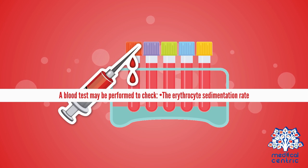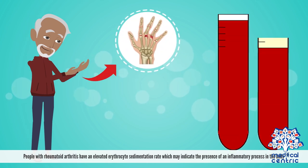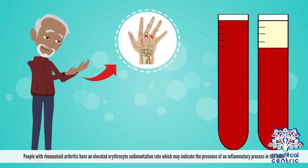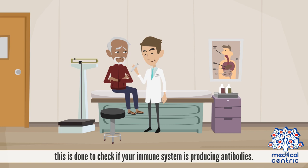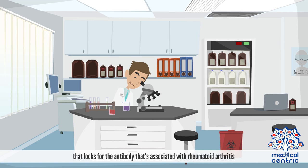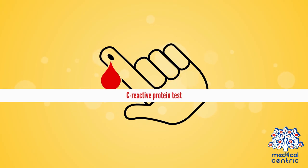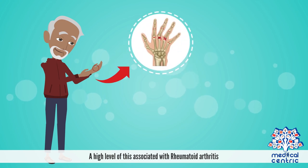A blood test may be performed to check the erythrocyte sedimentation rate — people with rheumatoid arthritis have an elevated rate, which may indicate an inflammatory process in the body. An anti-nuclear antibody test checks if your immune system is producing antibodies. An anti-citrullinated protein antibody test, or anti-CCP, looks for the antibody associated with rheumatoid arthritis. A C-reactive protein test measures severe inflammation, as a high level is associated with rheumatoid arthritis.